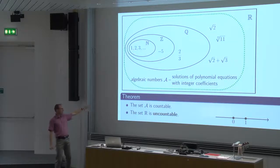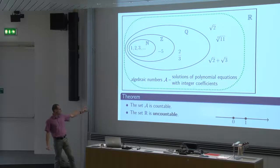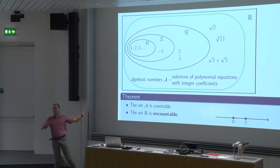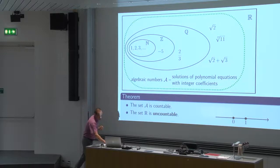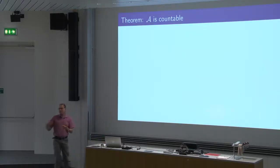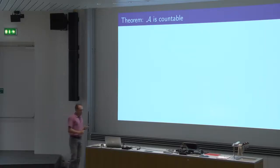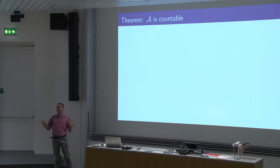So we have to prove these two bullet points. The first one is a slight generalization of the proof that the rationals are countable — we just go to the algebraic numbers. It's just slightly more symbols and notation, but it's not a new idea. Let's prove that the set of algebraic numbers is countable.